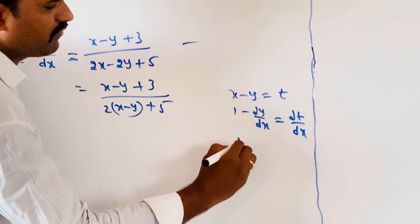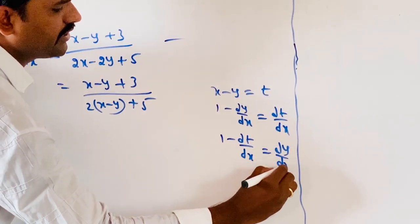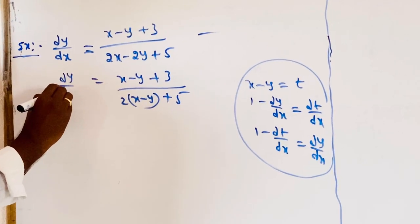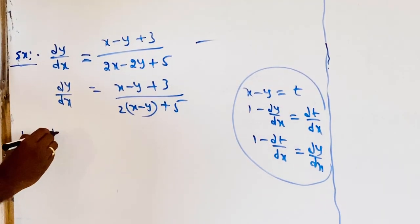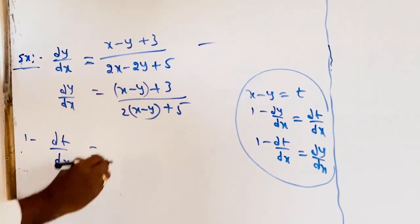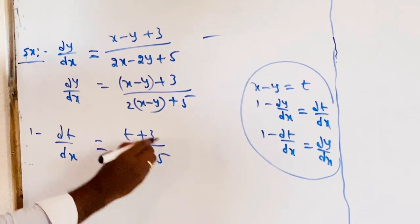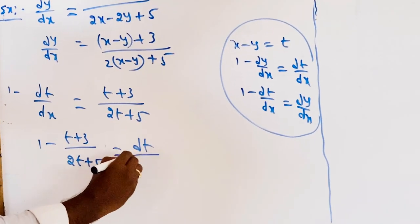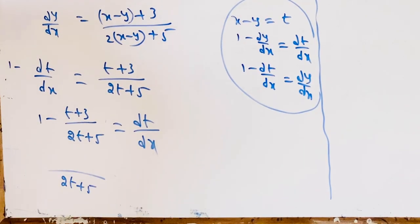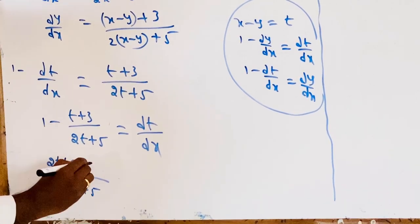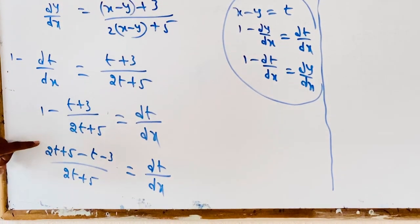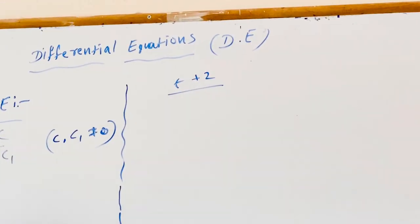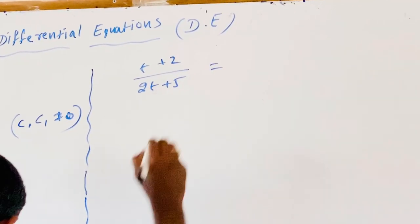Then dy/dx = 1 − dt/dx. Substituting these values into the given differential equation, dy/dx becomes 1 − dt/dx, and x − y becomes t. So we get: 1 − dt/dx = (t + 3) / (2t + 5). Taking the LCM, we get (2t + 5 − t − 3) / (2t + 5) = dt/dx. Simplifying: 2t − t = t and 5 − 3 = 2, giving (t + 2) / (2t + 5) = dt/dx.